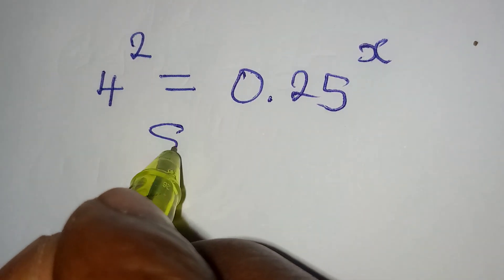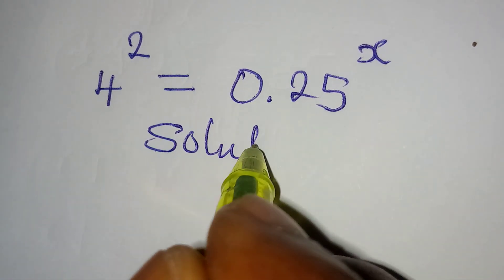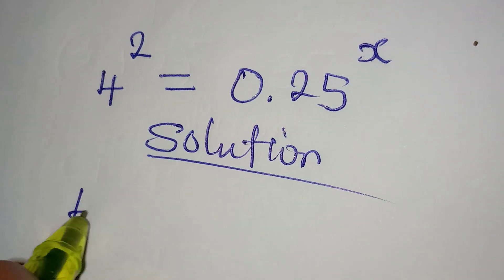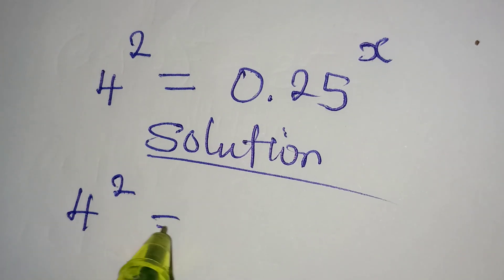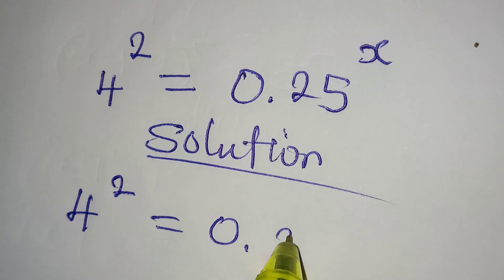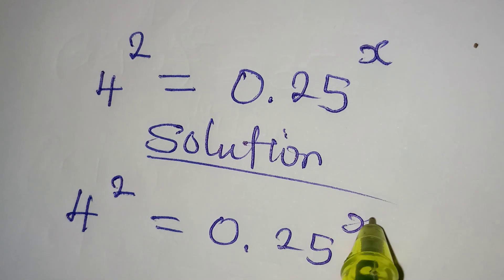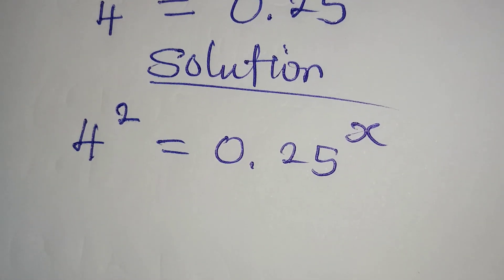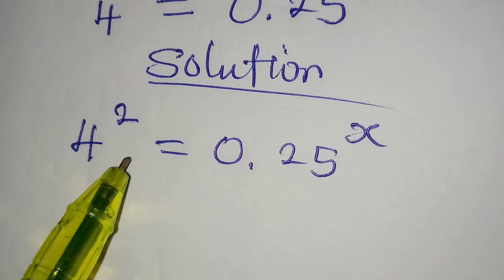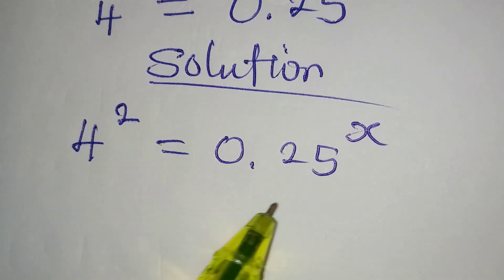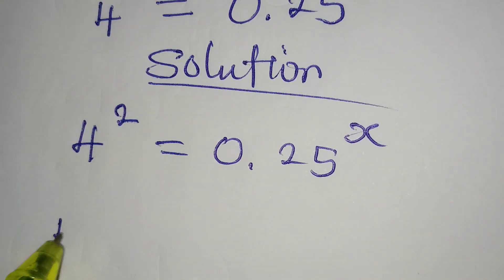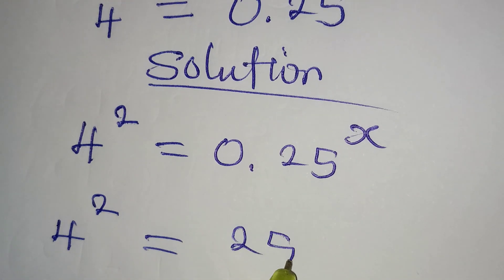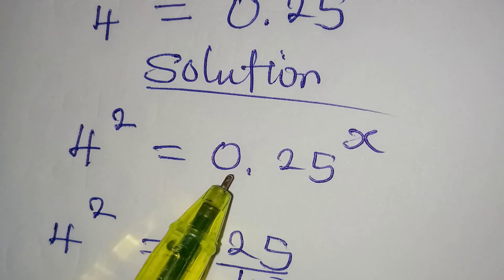Hello everyone, let us provide the solution to this problem. We have 4 to the power of 2 equal to 0.25 to the power of x. This is simple because we know what to do — now convert this to fractional form, so we have 4 to the power of 2 equal to 25 divided by 100, which gives us the same 0.25.